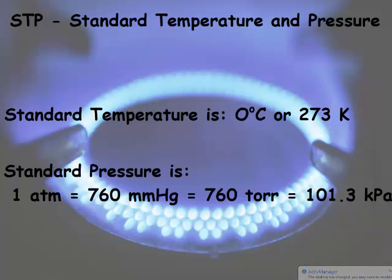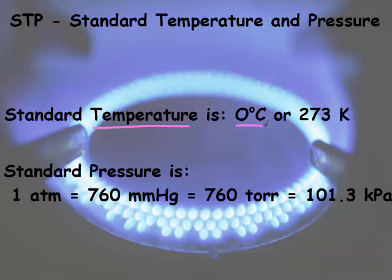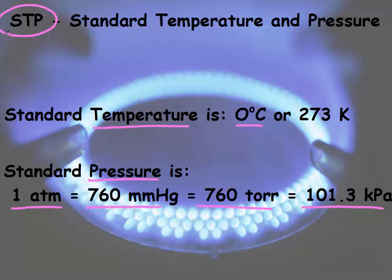Standard temperature and pressure is 0 degrees Celsius, or 273 Kelvin. Standard temperature is 0 degrees — remember you add 273 to get Kelvin, so 273 Kelvin. Standard pressure is any of our pressure conversions we just talked about. So when you see the letters STP, it's giving you a temperature and it's giving you a pressure.